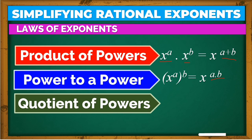Another law is quotient of powers. In product of powers we add, so when we multiply, we add the exponents. But here, when we divide, we subtract the exponents. Again, quotient of powers only works if the bases are the same. Like here, x and x — we just subtract their exponents.